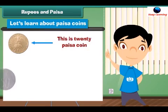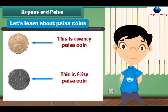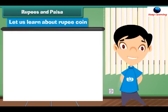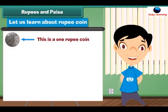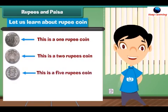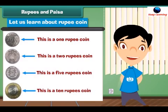Let's learn about paise coins. This is a 20 paise coin. This is a 50 paise coin. Now let us learn about rupee coins. This is a 1 rupee coin. This is a 2 rupees coin. This is a 5 rupees coin. This is a 10 rupees coin.